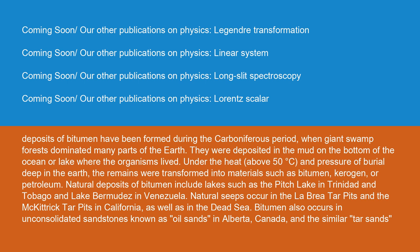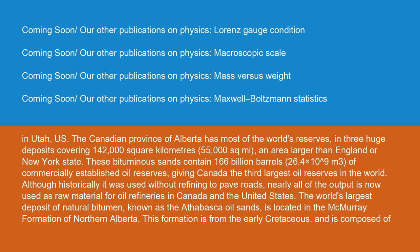Natural deposits of bitumen include lakes, such as the Pitch Lake in Trinidad and Tobago and Lake Bermudez in Venezuela. Natural seeps occur in the La Brea tar pits and the McKittrick tar pits in California, as well as in the Dead Sea. Bitumen also occurs in unconsolidated sandstones known as oil sands in Alberta, Canada, and the similar tar sands in Utah, U.S. The Canadian province of Alberta has most of the world's reserves in three huge deposits covering 142,000 square kilometers — an area larger than England or New York State. These bituminous sands contain 166 billion barrels of commercially established oil reserves, giving Canada the third largest oil reserves in the world.